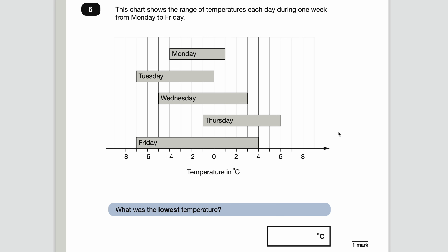Number six — this chart shows the range of temperatures each day during one week from Monday to Friday. What was the lowest temperature? This is only one mark so it should be straightforward. Along the x-axis we have temperature in degrees. The lowest temperatures were on Tuesday and Friday — between minus 6 and minus 8, so that must be minus 7. That was the lowest temperature that week.